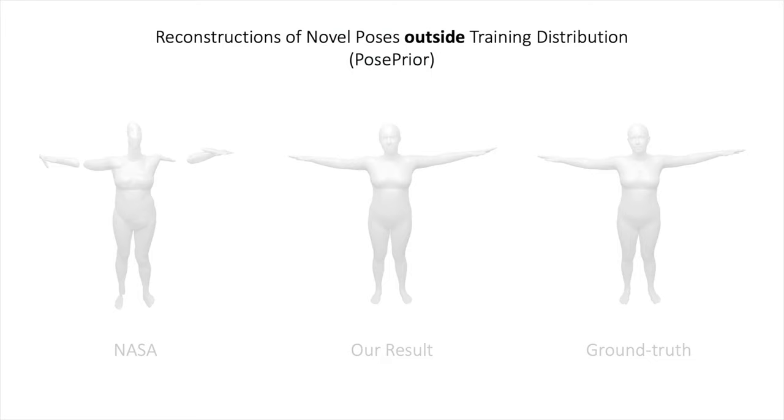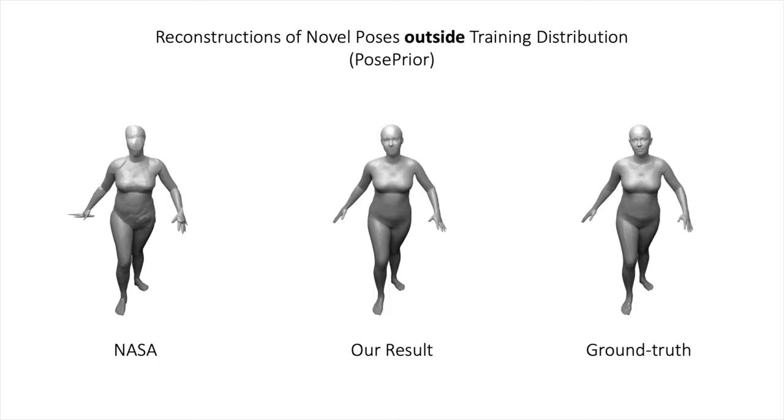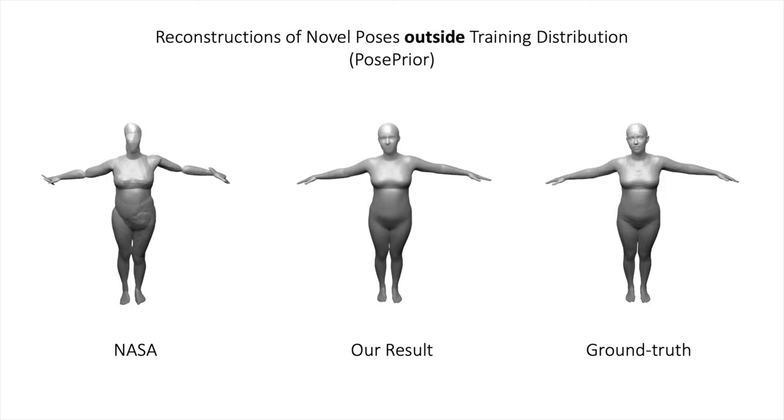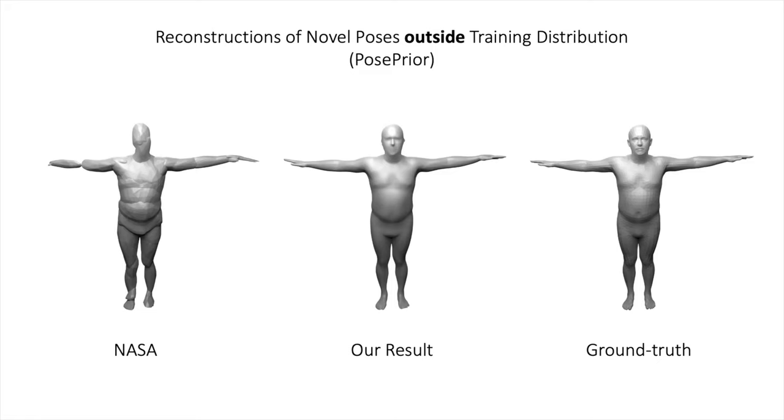We now demonstrate results of both methods on poses outside the training distribution. In this setting, the baseline fails completely while the proposed forward skinning model generalizes well. Here is another example with a more extreme pose.